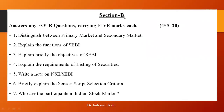Section B is all about 4 answers each, and each question is about 8 marks, making a total of 20 marks. Here we have all about theory and problems.